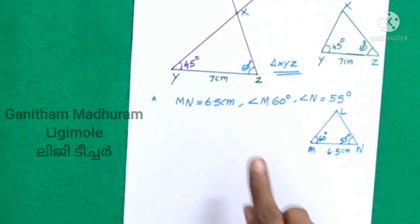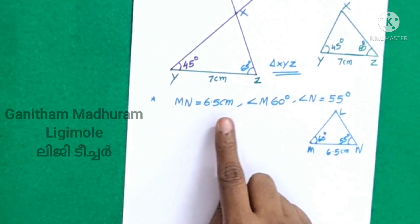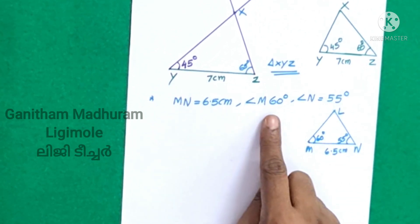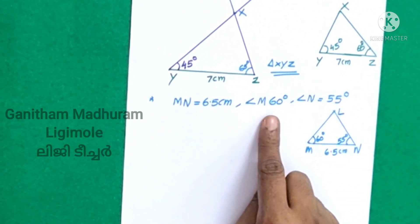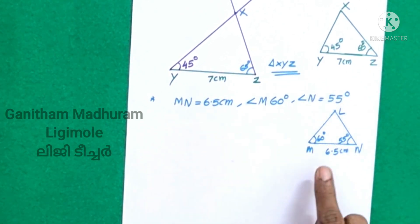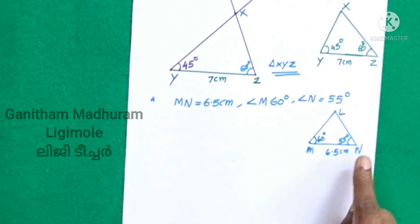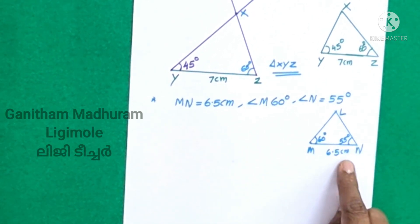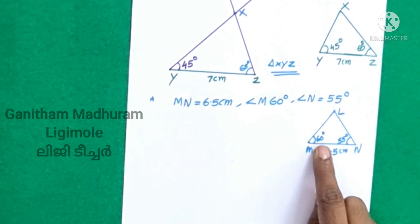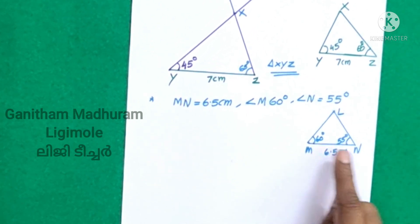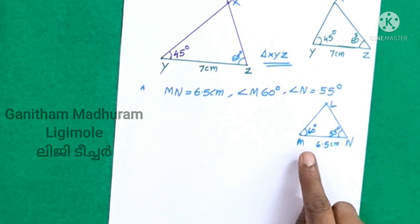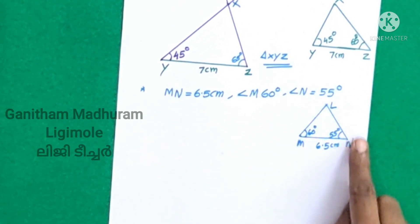The second one is MN 6.5 cm, angle M 60 degrees, angle N 55 degrees. We will be able to do the model picture.